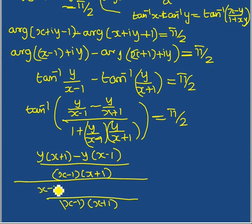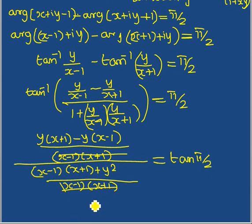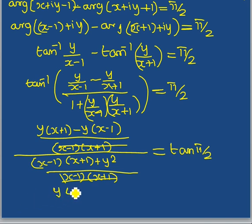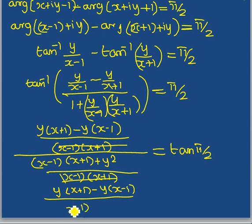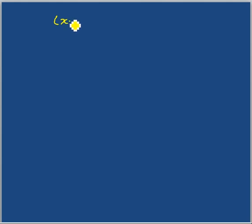Simplifying: [Y(X plus 1) minus Y(X minus 1)] divided by [(X minus 1)(X plus 1) plus Y squared] equals tan(π/2). The numerator becomes 2Y, and the denominator is X squared minus 1 plus Y squared. This gives us X squared minus 1 plus Y squared equals 0.